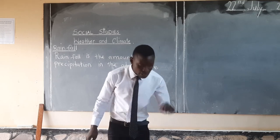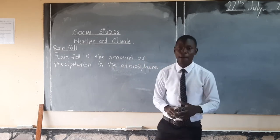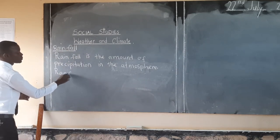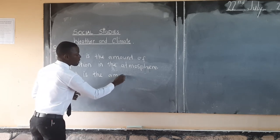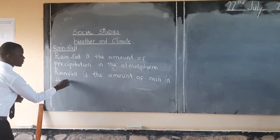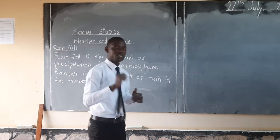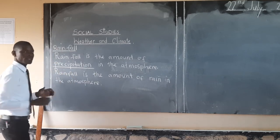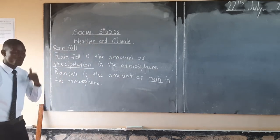The first definition is: rainfall is the amount of precipitation in the atmosphere. The reason I've given you a second definition is that some of you may have a challenge trying to remember the word precipitation. So, in place of precipitation, you can say rainfall is the amount of rain in the atmosphere.